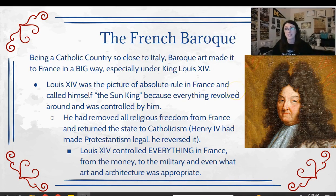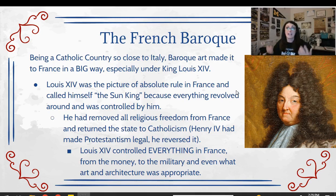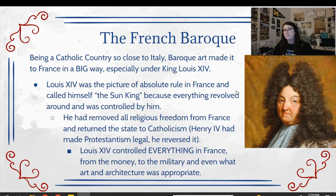First we have to start by establishing the French Baroque, because as we've already seen in our last lecture, the Baroque style of architecture and art is going to spread outside of Italy into other places. If you're a Catholic country, you're going to see Baroque art really look a lot like it does in the Italian Baroque. One of those places is going to be France, which is an extremely Catholic country, mostly thanks to the practices of King Louis XIV, who history knows as the Sun King.